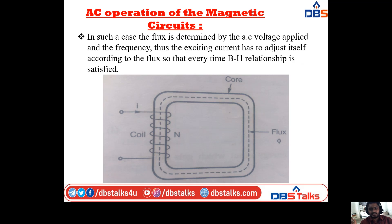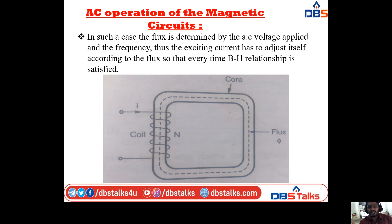In many applications such as transformers and AC machines, magnetic circuits are excited by AC supply. In such operation, inductors play a vital role even in steady state; in DC, an inductor acts as a short circuit. The flux is determined by the AC voltage applied and frequency, so the exciting current must adjust itself to satisfy the flux relationship.